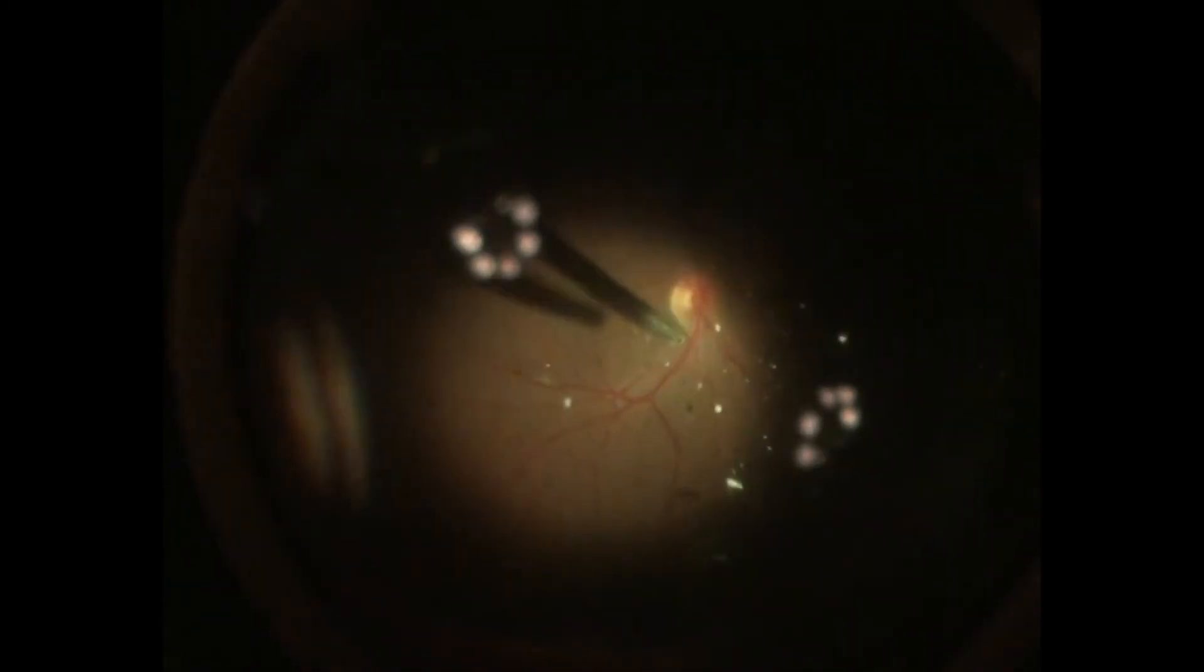At the end of the surgery, the eye is filled with air. This helps to maintain the shape of the eye and also prevents oozing from the smaller blood vessels.